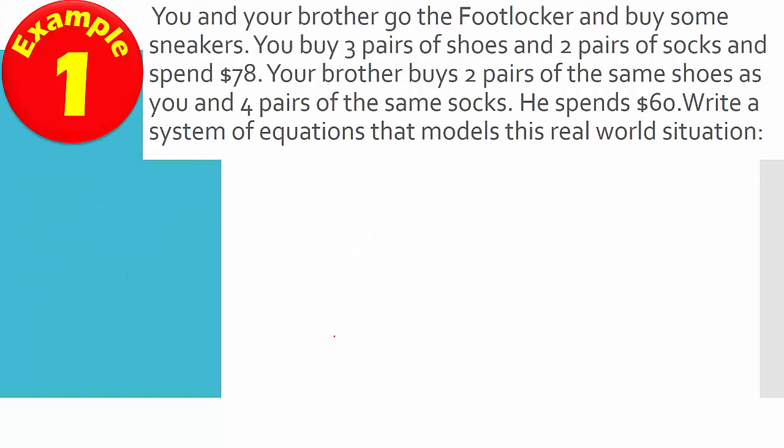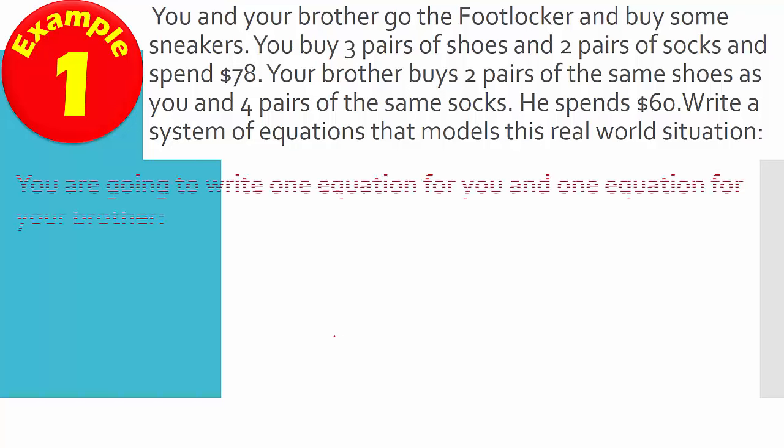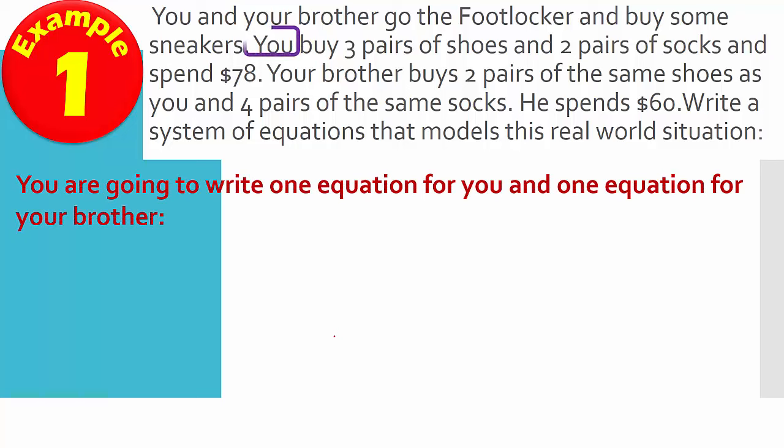First example. You and your brother go to Foot Locker and buy some sneakers. You buy three pairs of shoes and two pairs of socks and you spend $78. Your brother buys two pairs of the same shoes as you and four pairs of the same socks and he spends $60. We need to write a system of equations that model this real world situation. So you're going to write one equation for you, one equation for your brother. So start off with you. I've kind of color coded this to make it a little bit easier.